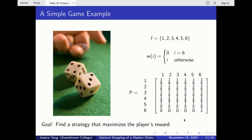What would your strategy be if your goal is to maximize your reward? The simple game represents an optimal stopping problem of a discrete time Markov chain, which is a random process with countable time and whose next state depends only on its current state and not its past history.